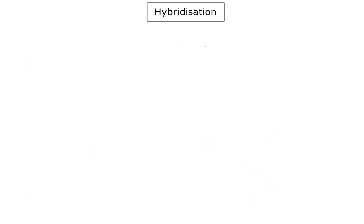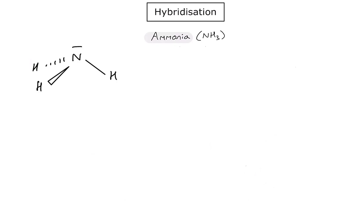Let's have a look at the hybridisation that occurs to a nitrogen atom when it forms ammonia. Here's a nice Lewis diagram of ammonia, drawn in 3D so that we can see the geometry as well. There are a few key points we need to mention about ammonia before we consider hybridisation.